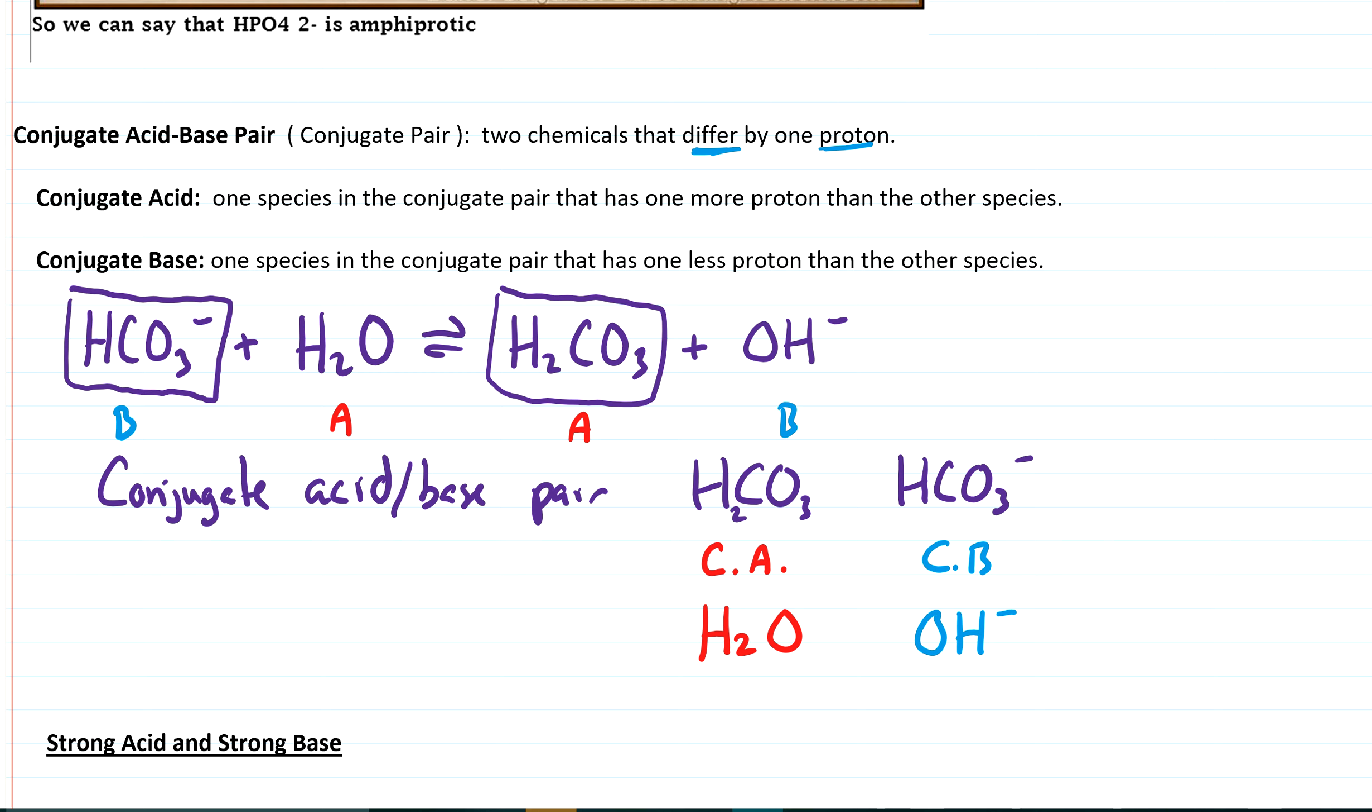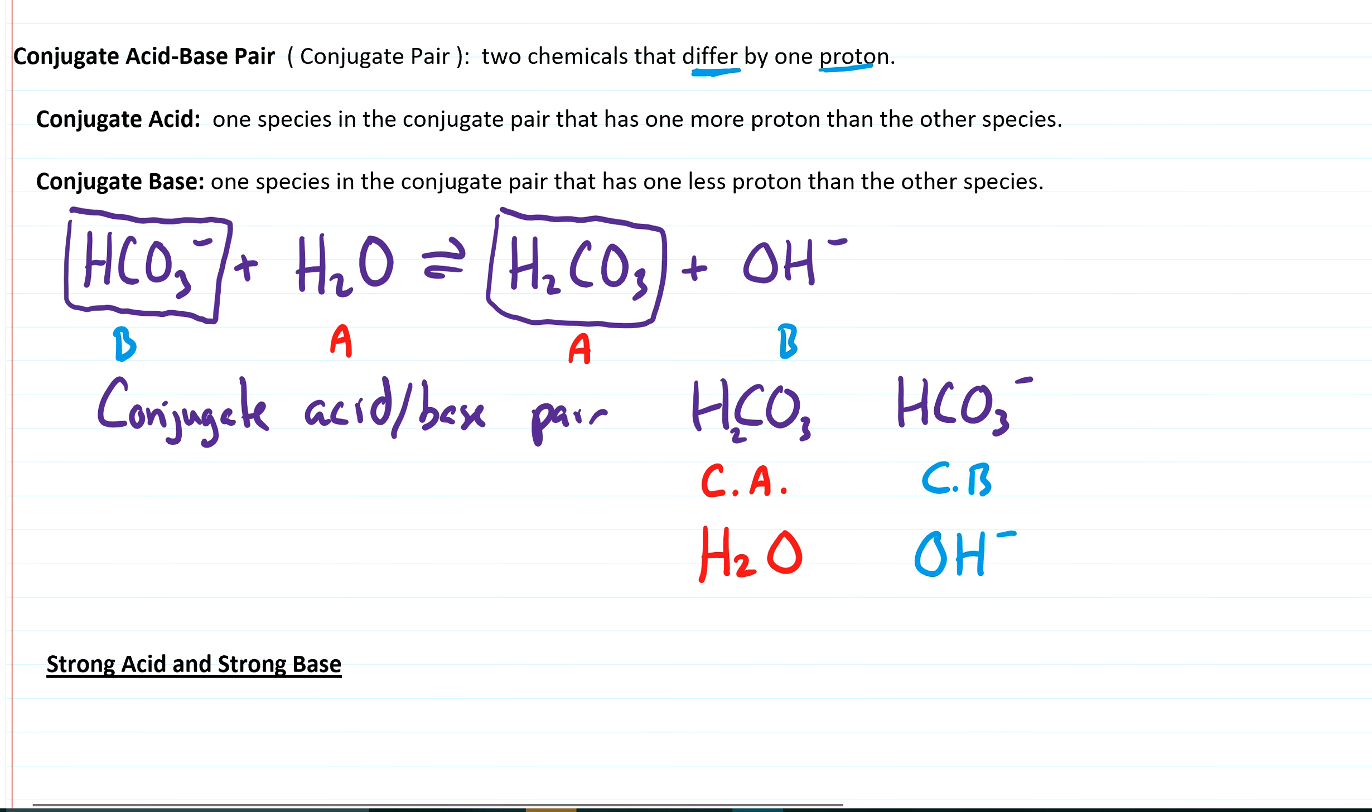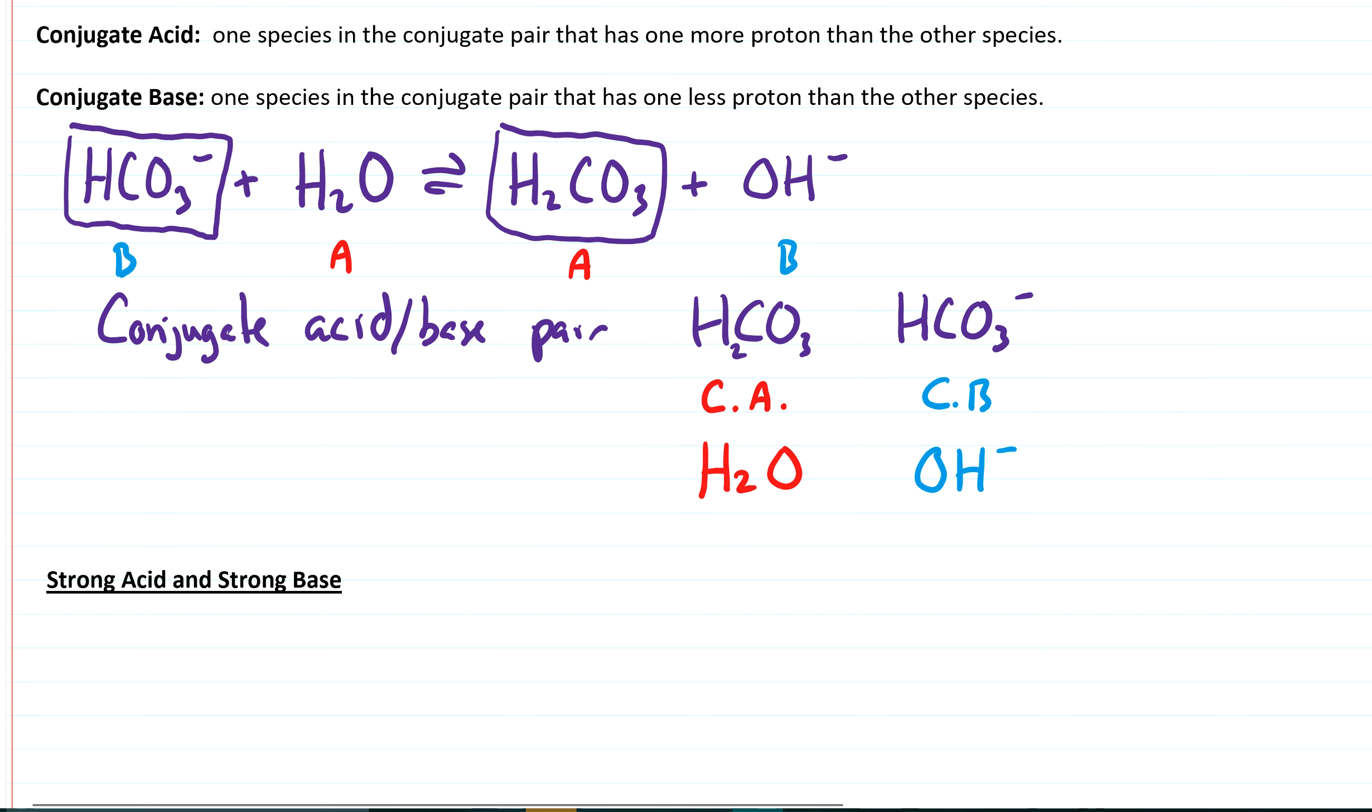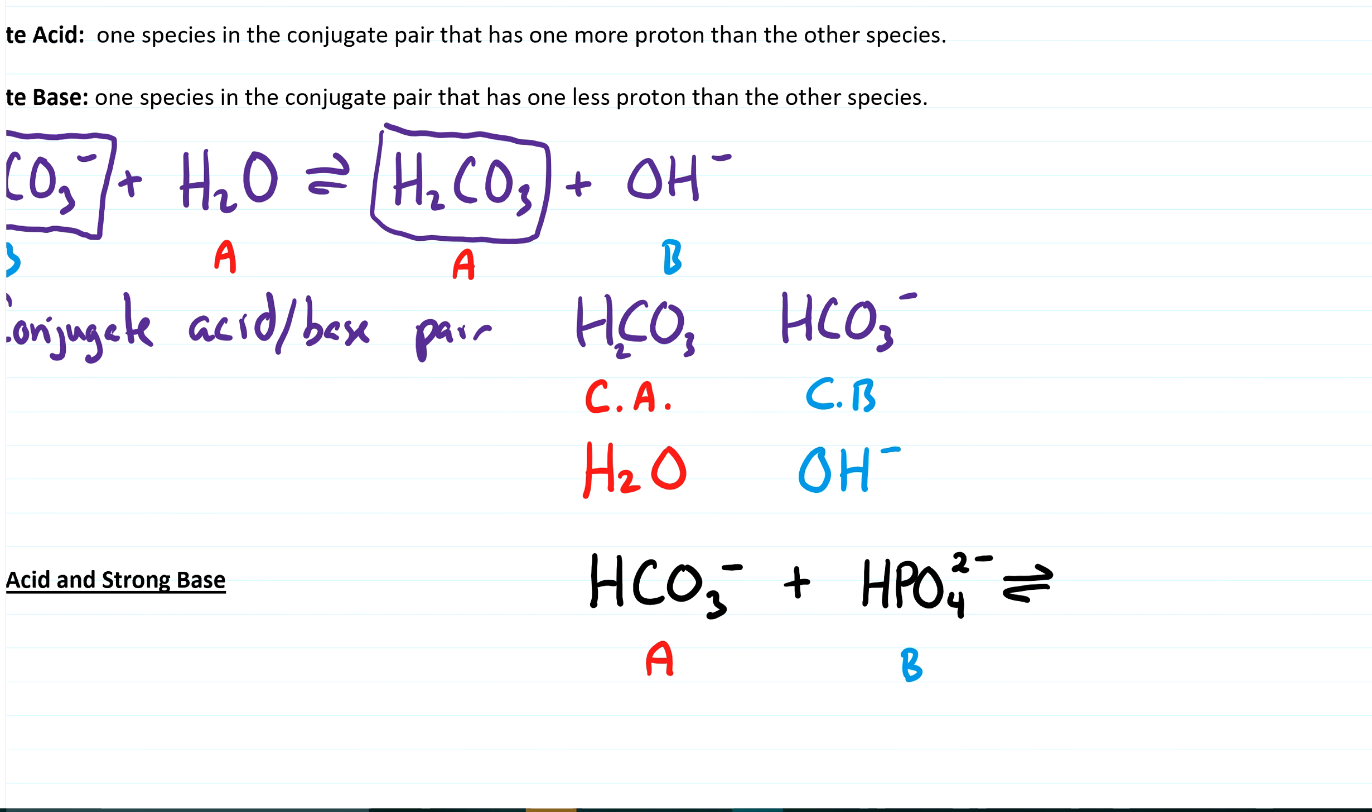So let's just try one more example like that. So let's try HCO3- reacting with, let's say, HPO4 2-. And let's say that we're going to tell you that this compound, this may not be true if you look at the data table. Let's just go with this right now. Let's say that's the acid and that's the base. I'd like you to predict the products and then write the conjugate acid-base pairs.